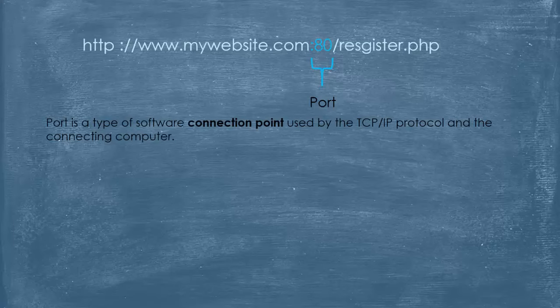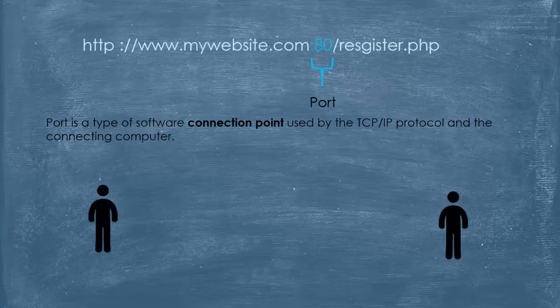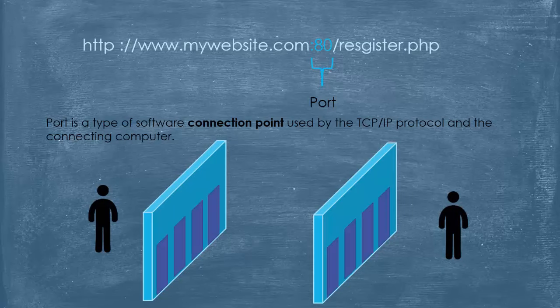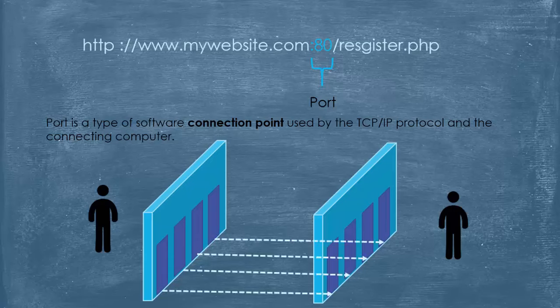A port is a type of software connection point used by the TCP/IP protocol and the connecting computer. Think of it as two persons who want to meet, with two parallel walls between them. Each wall has the same number of doors as the other, each door facing its opposite, leading just to it. To meet, the two persons should open the same door in each wall. By specifying a port number in a URL, we are telling the server from which port our request is coming and from which it should be received. Every protocol has a default port number, so if we don't specify one, the default is used and it doesn't appear in the URL. For example, HTTP's default port is 80.